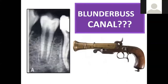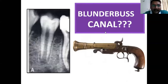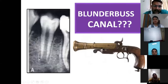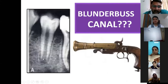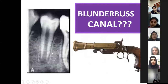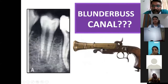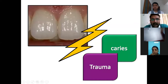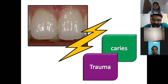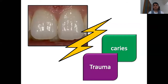The problem arises when we have a tooth like this. This kind of tooth is called a blunderbuss canal — the apex of the tooth canal is wider than the cervical part. You will come across this situation only in two cases: either the tooth is damaged because of trauma and needs treatment, or the tooth is carious and needs treatment.